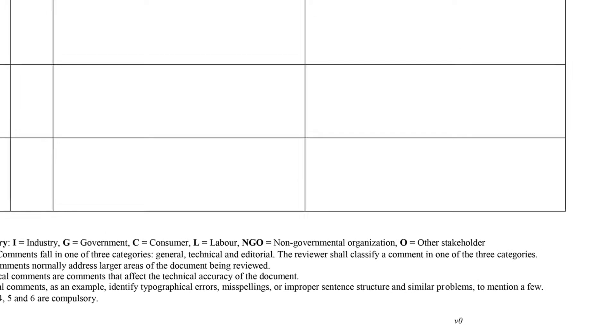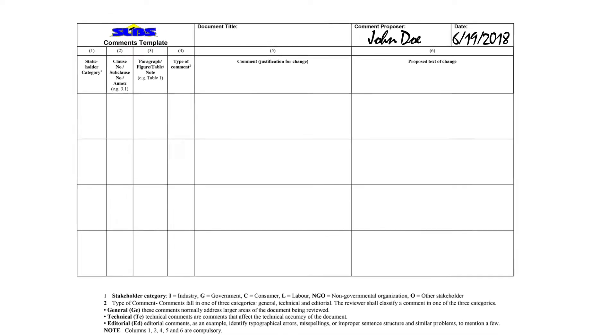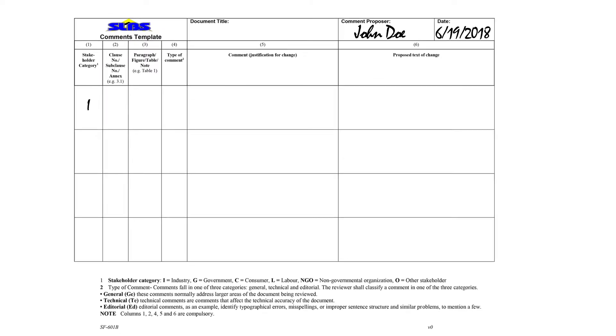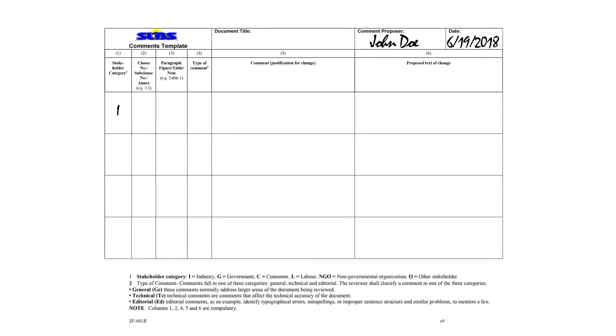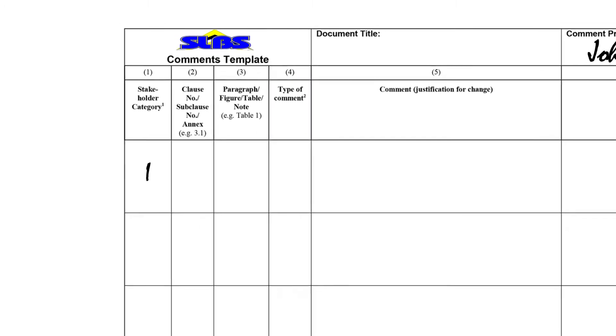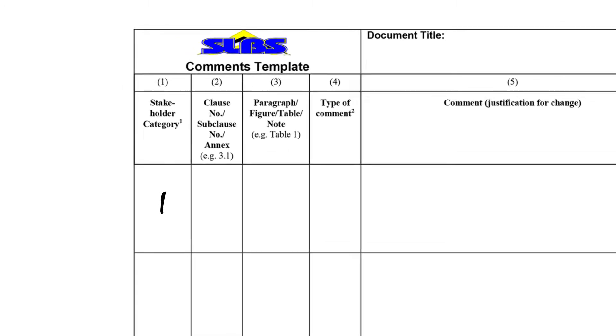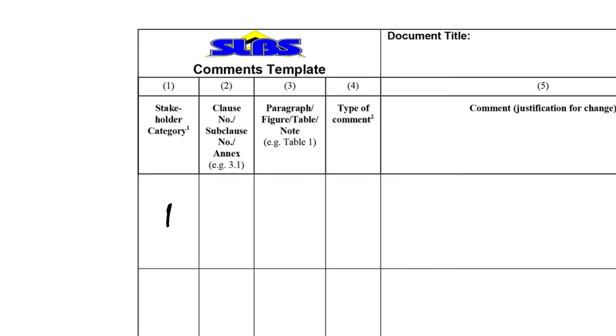The form then has the specific clause that you would like to make the comment on. You can put the clause number or the sub-clause number as per the standard. If it is an annex, you can also put in the annex designation. Then you go on to include the paragraph, figure, table, or note you are making the comment on.